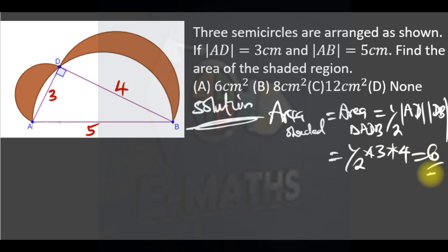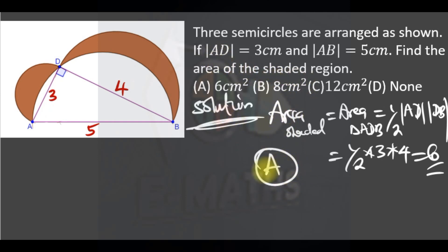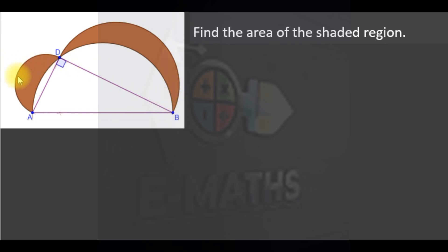So the answer is 6, giving us option A. Now let me prove how we got the shaded area equal to the area of the triangle. We have the same diagram — let's prove that the area of the shaded region equals the area of the triangle.